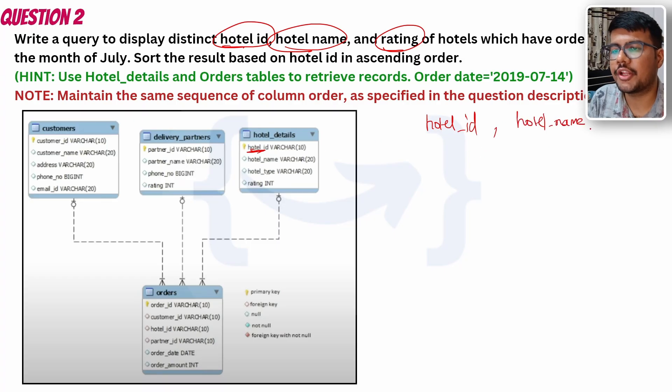From where can I get hotel_id? From here I can get hotel_id, so I will just write hotel_id. Then what's been asked? Hotel_name. Then what has been asked? Rating of hotels which have orders in the month of July. So I need to find the orders. We have an orders table, we have a hotel table, and I can see the primary key would be definitely hotel_id and hotel_id, isn't it? These are the primary keys that definitely I can use to connect.